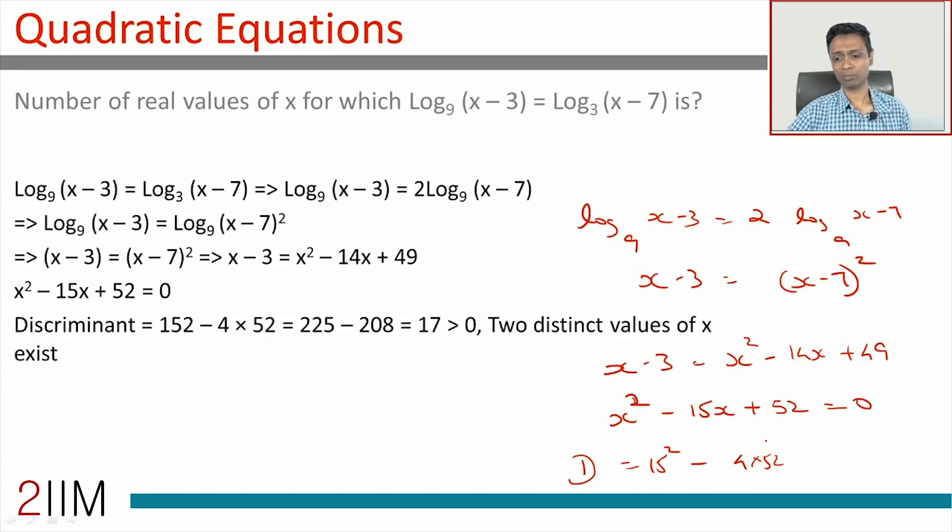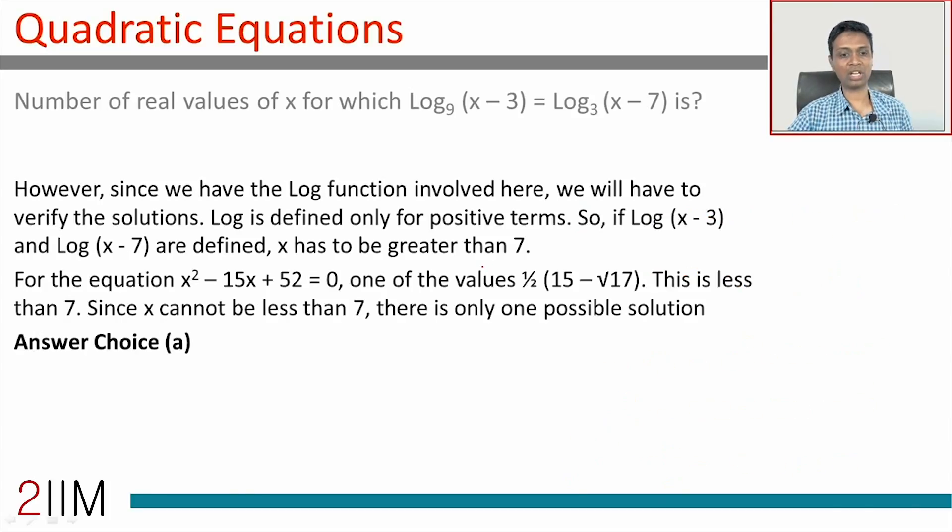This is 225, which is greater than 4(52), so the discriminant is greater than 0, meaning two solutions are possible. But that is not enough. We know two real values are possible for this, but will both values work? That's what we need to think about.